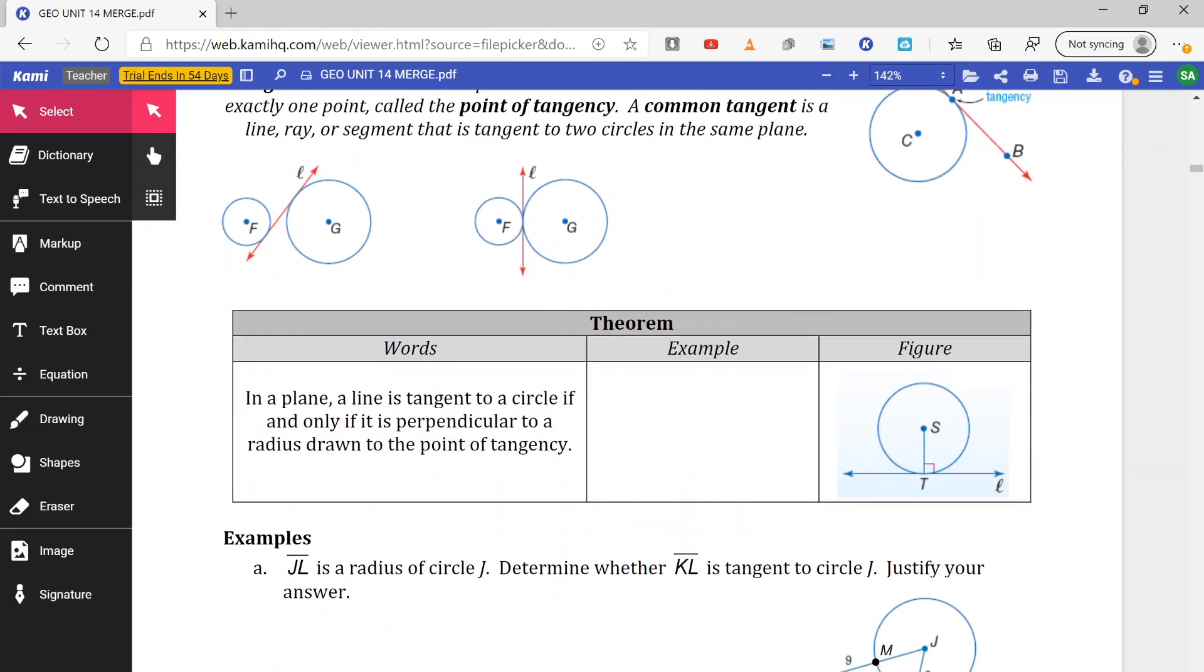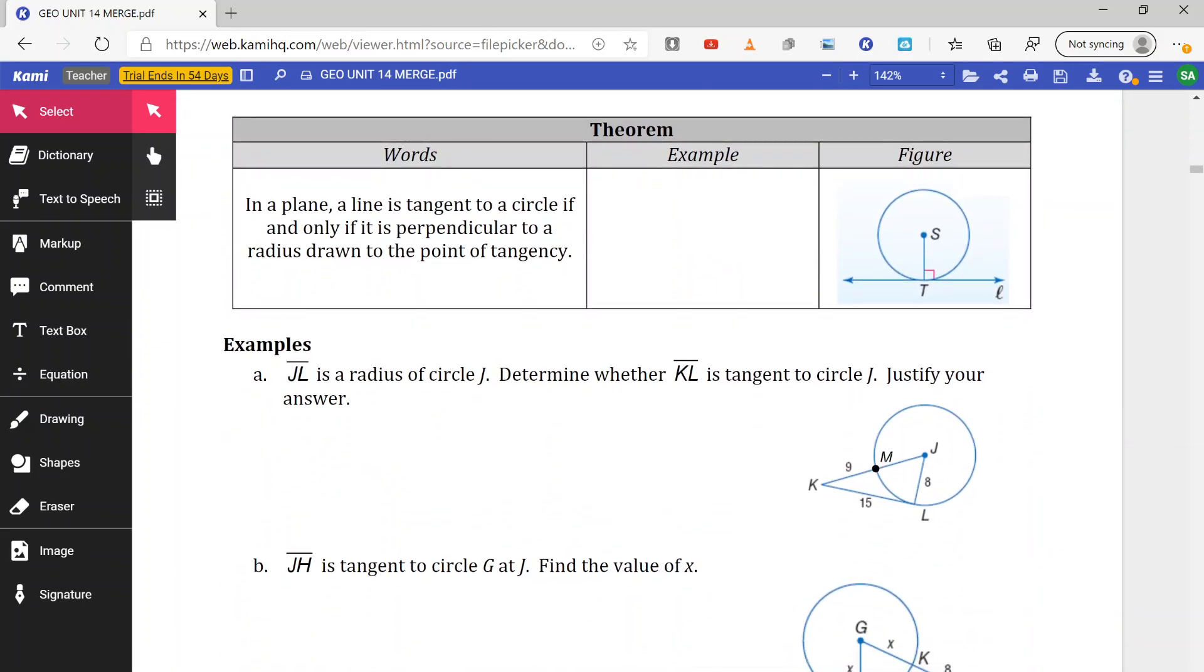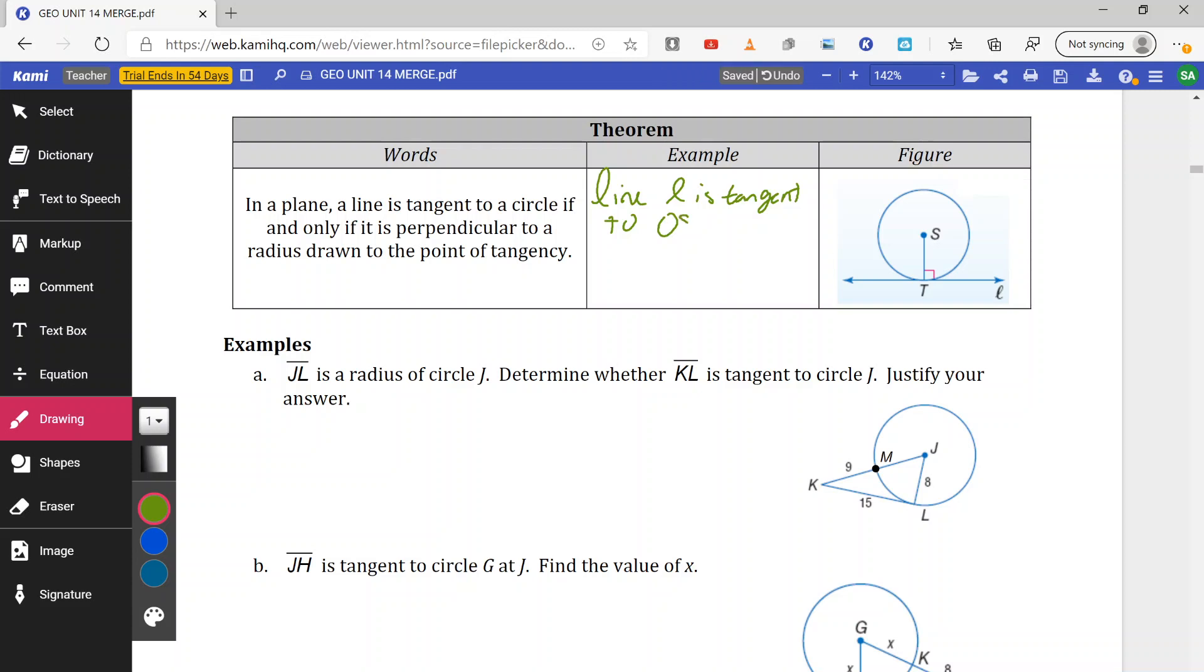Tangents are pretty straightforward. Basically, it says if a line is tangent, if and only if it is perpendicular to a radius drawn to the point of tangency. So notice with circle S, radius is drawn S-T, line L. As long as S-T is perpendicular to line L, it is tangent.